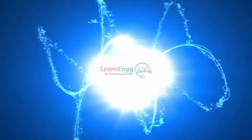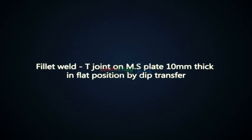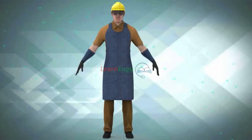In this video we are going to see fillet weld T joint on MS plate 10mm thick in flat position by dip transfer. Wear personal protective equipment.